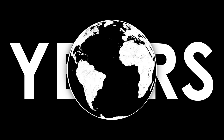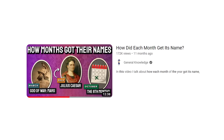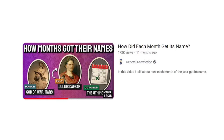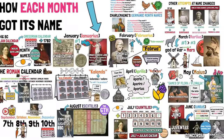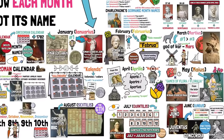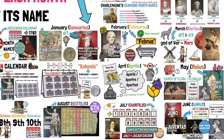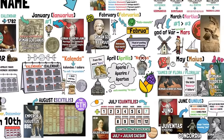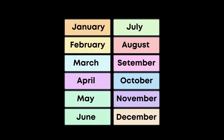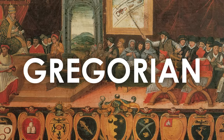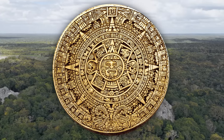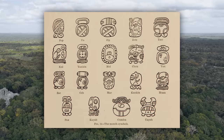However, for some people throughout the world, days, months, and even years are different than for most. Last year around this time, I made a video about how each month of the Gregorian calendar got its name — you can check the description for the link. We got to learn how August was named after Augustus the Roman Emperor, how October was named after being the 8th month when the Roman calendar only had 10 months, among other names.